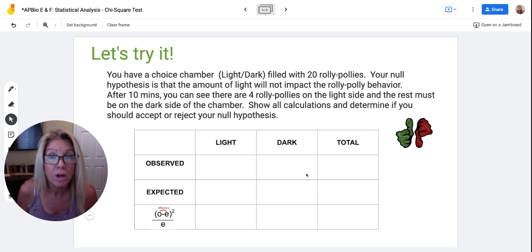And then you put what you observed, which was four and then 16, which also equals 20. You take the difference and you square it, put it over what you expected, and you add those two numbers up.